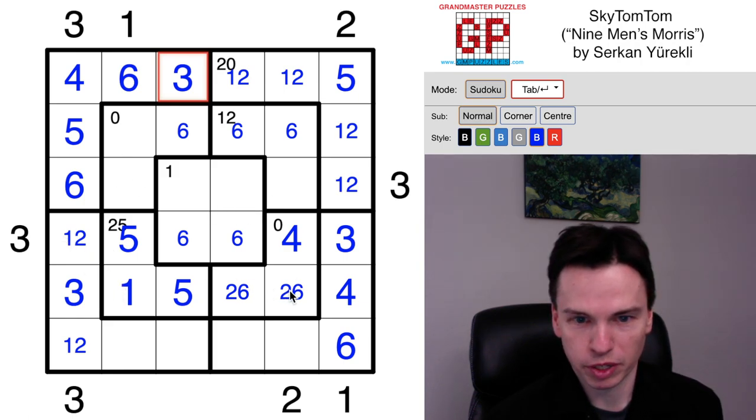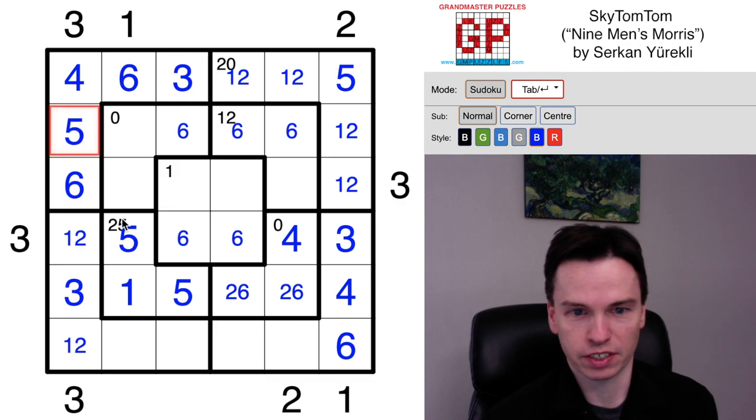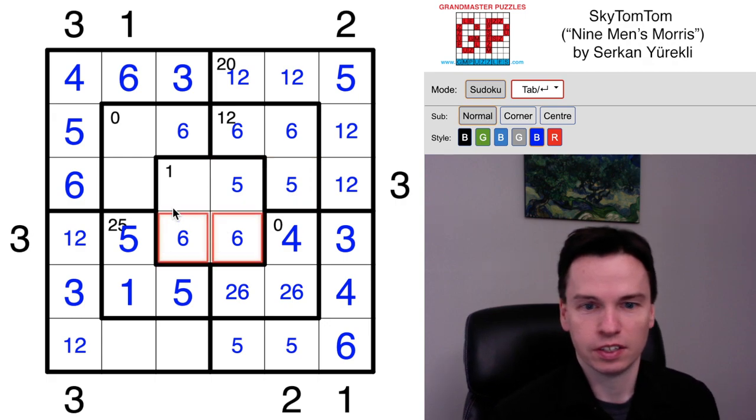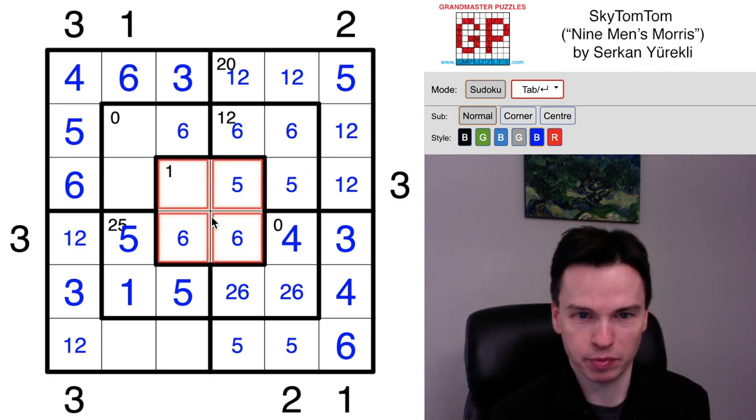Still some more to do and it might come from tracking digits we haven't tracked yet. We've got four fives in the grid, so let's think about the remaining two fives. Here's a cage that's probably from the Tom-Tom sense can be pretty key.